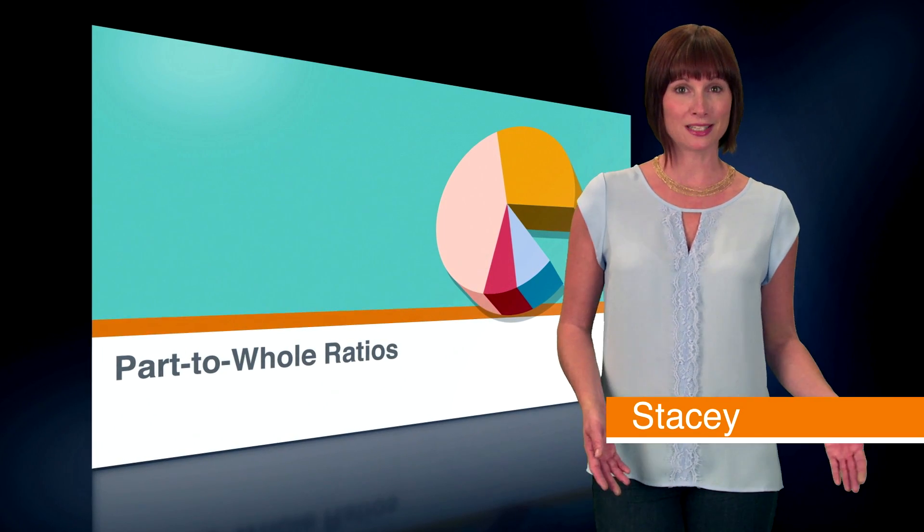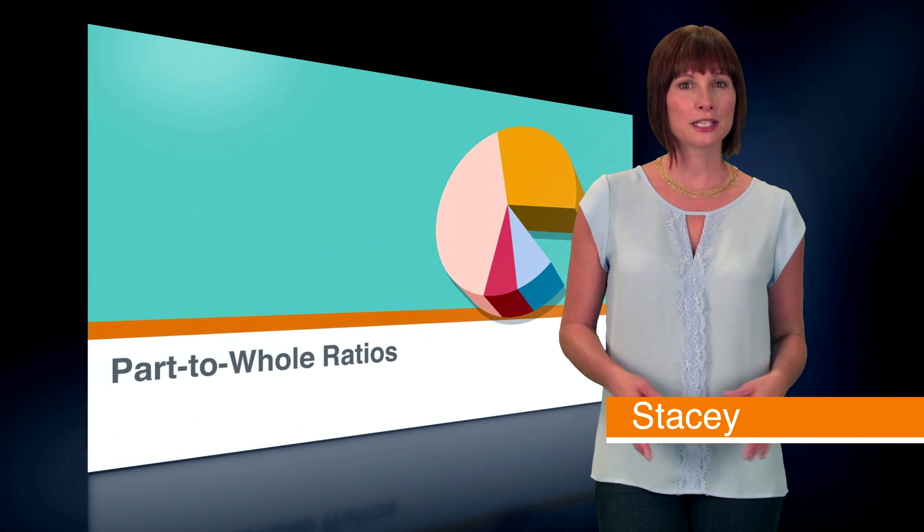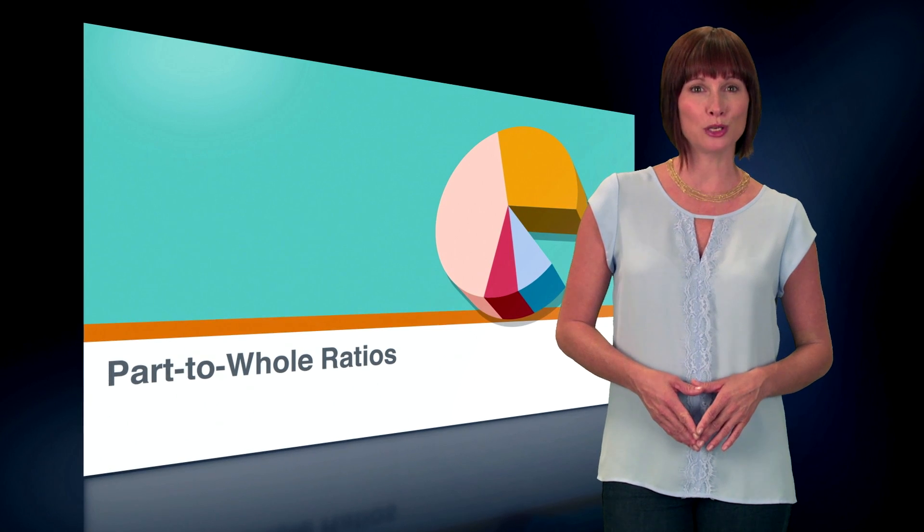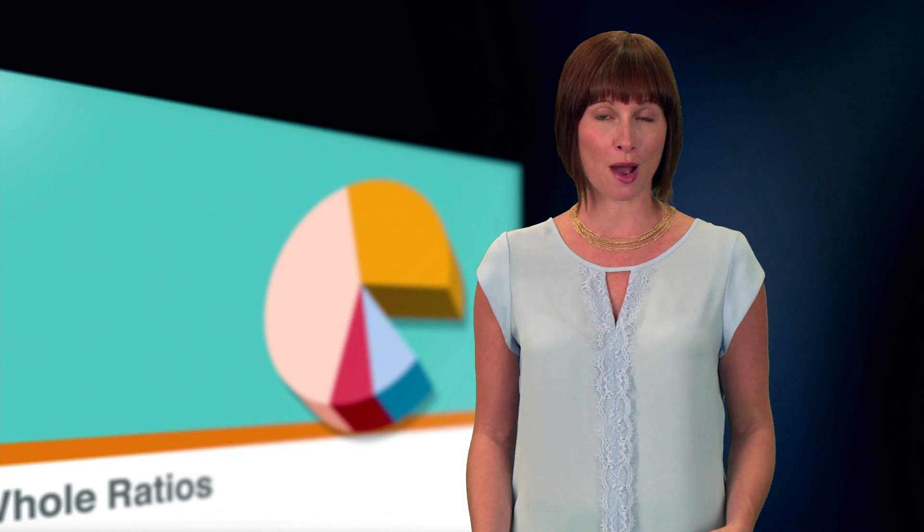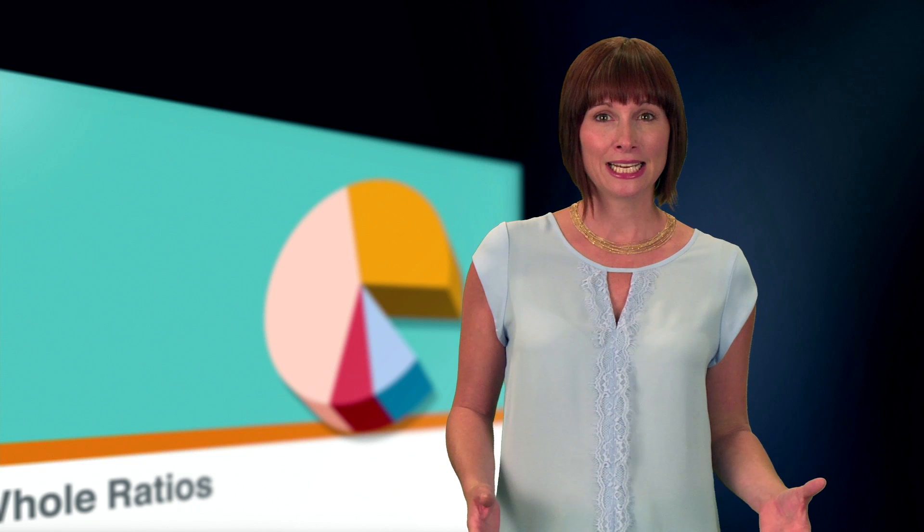Have you ever noticed how they skimp on pizza toppings all the time? What if I told you that the next time this happens, you can use math to present your case for more toppings? Basically, the amount of toppings compared to the size of the pizza is something that can be expressed mathematically in the form of a ratio.